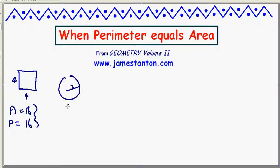Or a circle of radius 2. The area is pi r squared, so 4 pi, and the perimeter is 2 pi r, 4 pi. They're the same.